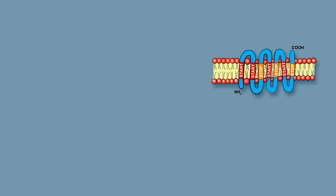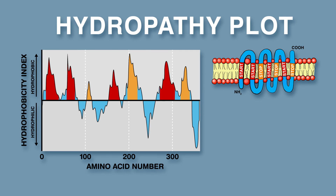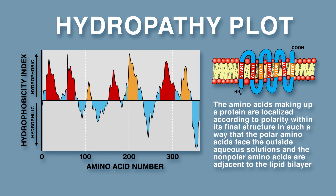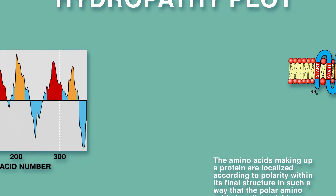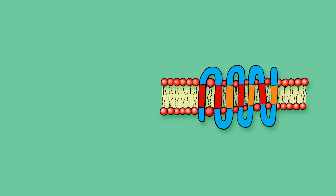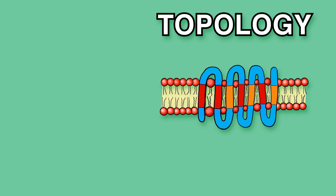Transmembrane protein structure can be predicted using a hydropathy plot, which has hydrophobicity index on the y-axis and amino acid number on the x-axis. The amino acids making up a protein are localized according to polarity within its final structure, such that polar amino acids face the outside aqueous solutions and nonpolar amino acids are adjacent to the lipid bilayer. Transmembrane proteins can also be classified by topology, based on the position of N and C termini, as well as start transfer and stop transfer sequences.